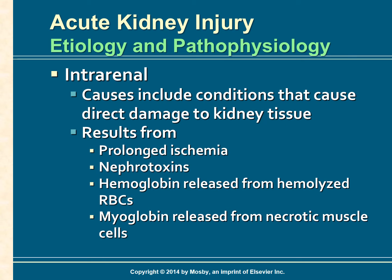Intra-renal causes of AKI include conditions that cause direct damage to the kidney tissue, resulting in impaired nephron function. The damage usually results from prolonged ischemia or nephrotoxins such as aminoglycoside antibiotics, contrast media, hemoglobin released from hemolyzed red blood cells, or myoglobin released from necrotic muscle cells. Nephrotoxins can cause obstruction of intra-renal structures by crystallization or by damaging the epithelial cells of the tubules.